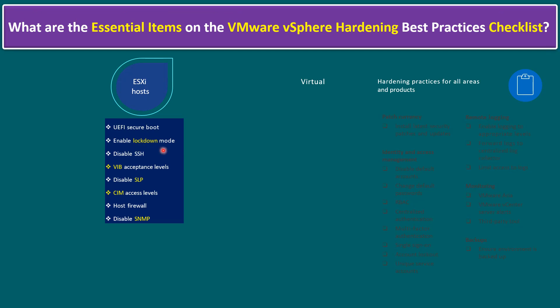Lockdown mode means the ESXi host cannot be managed individually — it can only be managed through the vCenter server. And disable SSH. In a production environment, this is the recommended hardening. Whenever it is necessary, we can enable SSH, but once your activity is completed, keep the ESXi host SSH session in a disabled state.